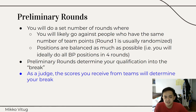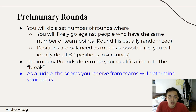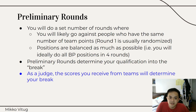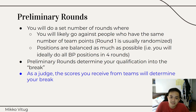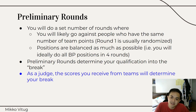Positions are balanced as much as possible. In BP, you have 4 teams: opening government, opening opposition, closing government, and closing opposition — OG, OO, CG, CO. You will ideally do all of those positions in 4 rounds. But sometimes you will have a difficulty where, for the last round, you have 2 teams that both need to do CO, but only one of them can. The TAB algorithm will maximize this balance as much as possible, but it won't assure that you do all positions.